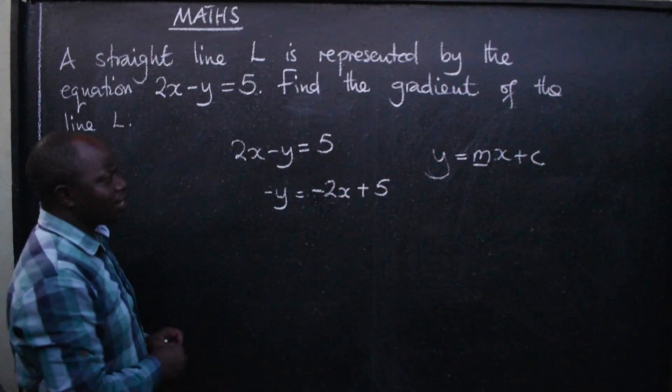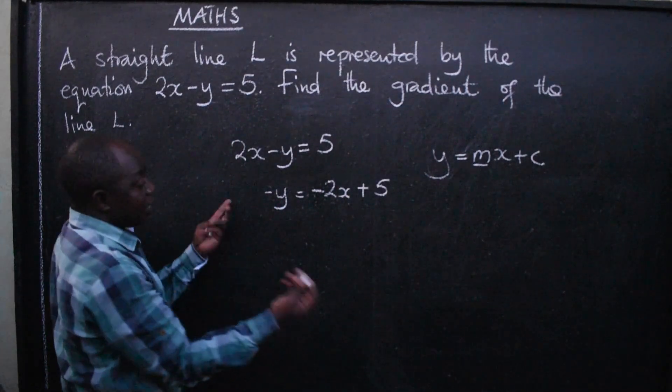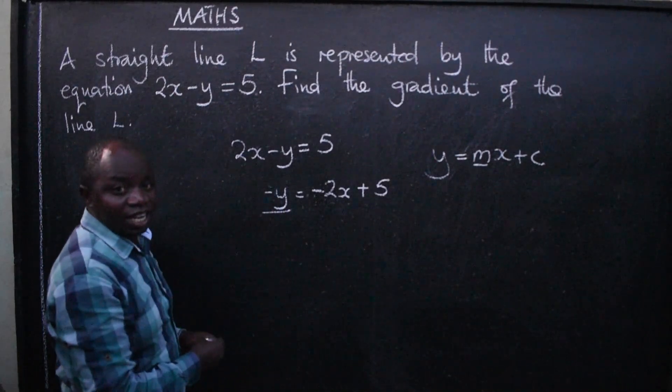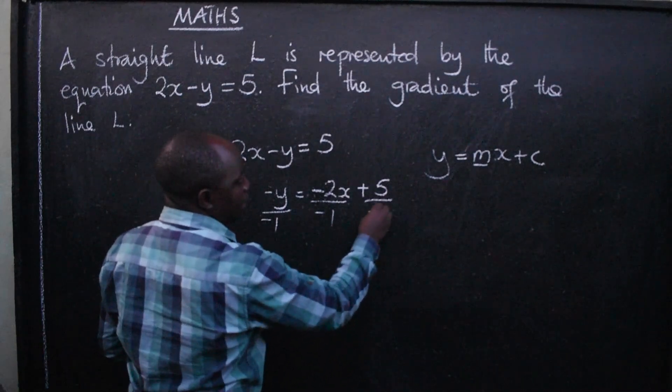Next, y must be positive, not negative. So we can divide throughout by negative 1 to get rid of the negative. By negative 1 here, by negative 1 here, by negative 1.